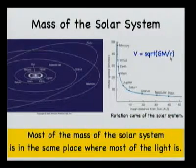A couple of things to notice from the solar system: number one is as the objects move further and further from the sun, they travel slower. Also if you look at the solar system, the light that you can see is coming from the sun — pretty much everything is coming from the sun. And it's also true that the mass in the solar system is concentrated in the sun. So most of the mass is in the same place as the light. Light distribution and matter distribution go together.